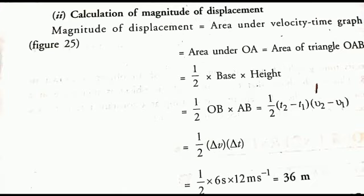The next use is the calculation of the magnitude of displacement. We can get this by calculating the area under the velocity-time graph. Here, the area under OA is the area of triangle OAB. Area of triangle = ½ × base × height = ½ × OB × AB = ½ × (t2 − t1) × (v2 − v1). So we have ½ × 6 × 12 = 36 meters. The magnitude of displacement in this case is 36 meters.